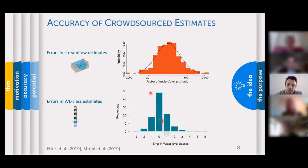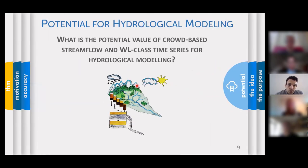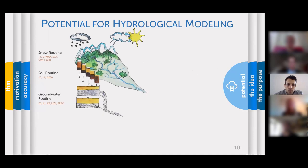Based on these results we wanted to check what is the potential of that data for hydrological modeling — can it be used to calibrate hydrological models if time series have inaccuracies from citizen scientists' estimates? As a small excursion for those unfamiliar: a hydrological model is a representation of a landscape or catchment in computer code.